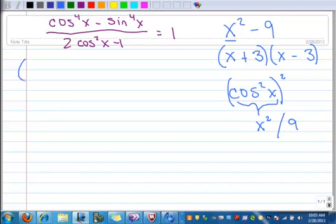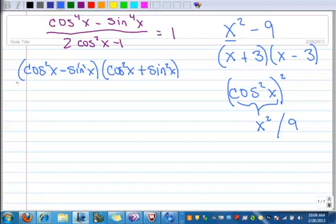All right, so we're going to factor that. So the numerator factored becomes cosine squared x minus sine squared x times cosine squared x plus sine squared x. All of that is over 2 cosine squared x minus 1.